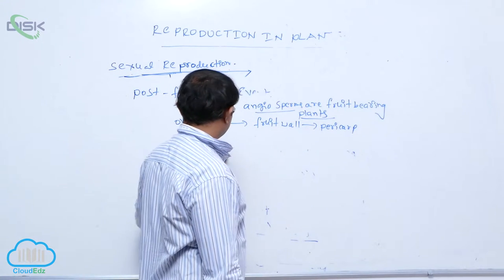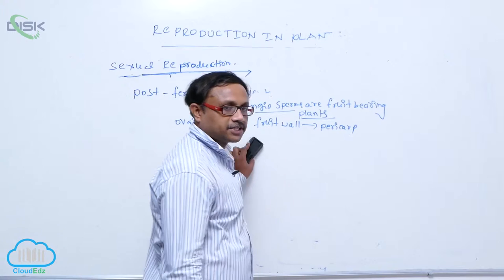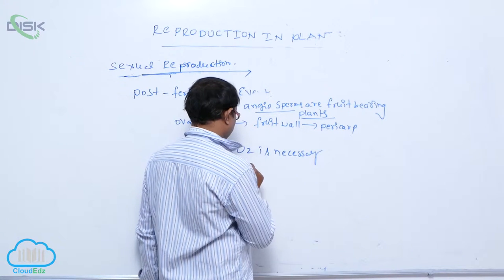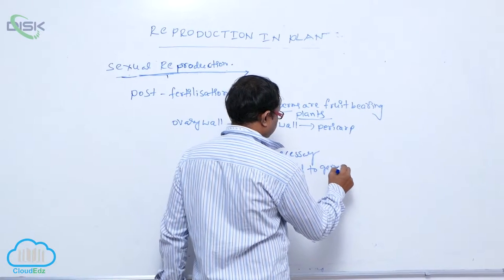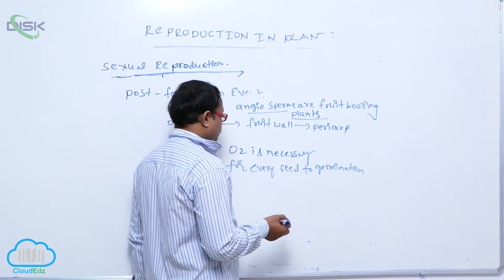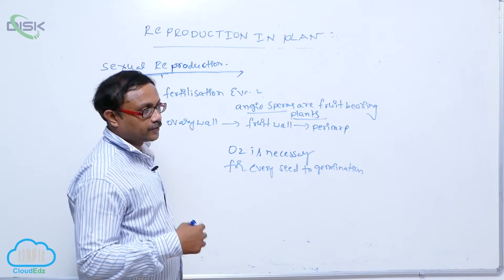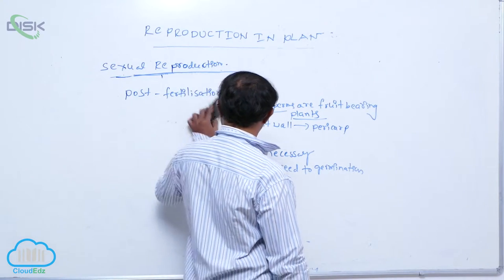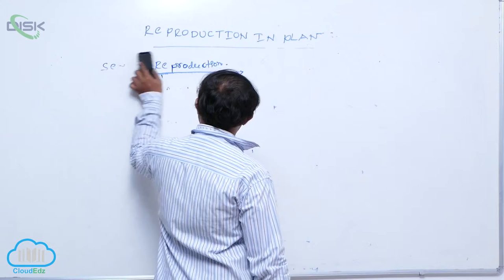In mangrove soils, less amount of oxygen is present. Since oxygen is necessary for seed germination, seeds cannot germinate in the soil. That is why seeds germinate while still inside the fruit, with the fruit still attached to the plant. This is the vivipary condition.